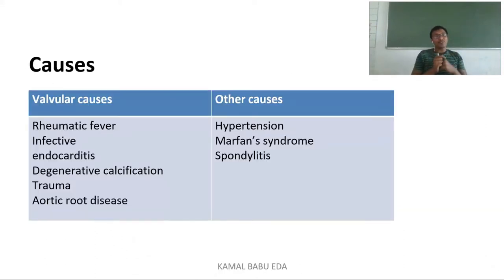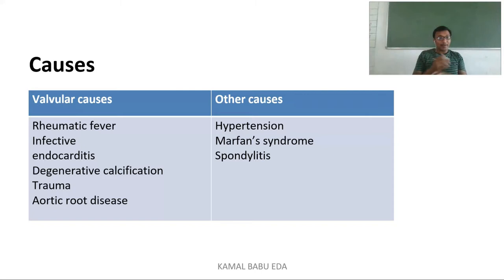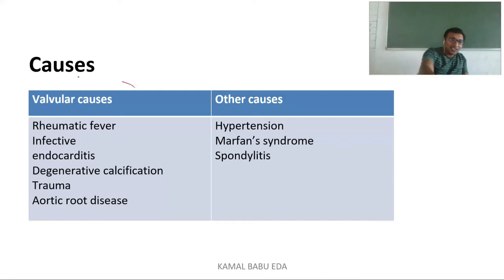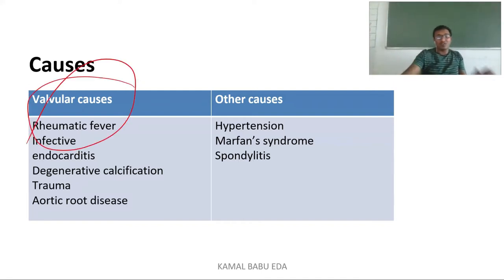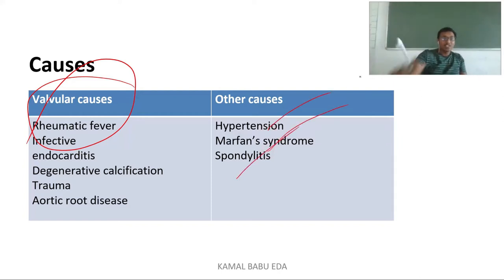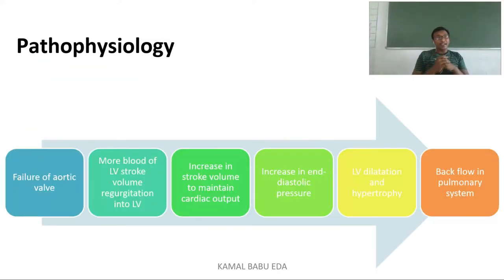There are different types of causes: valvular causes and other causes. Other causes include hypertension, Marfan syndrome, and spondylitis. Valvular causes include rheumatic heart fever, infective endocarditis, degenerative calcification, trauma, and aortic root disease.